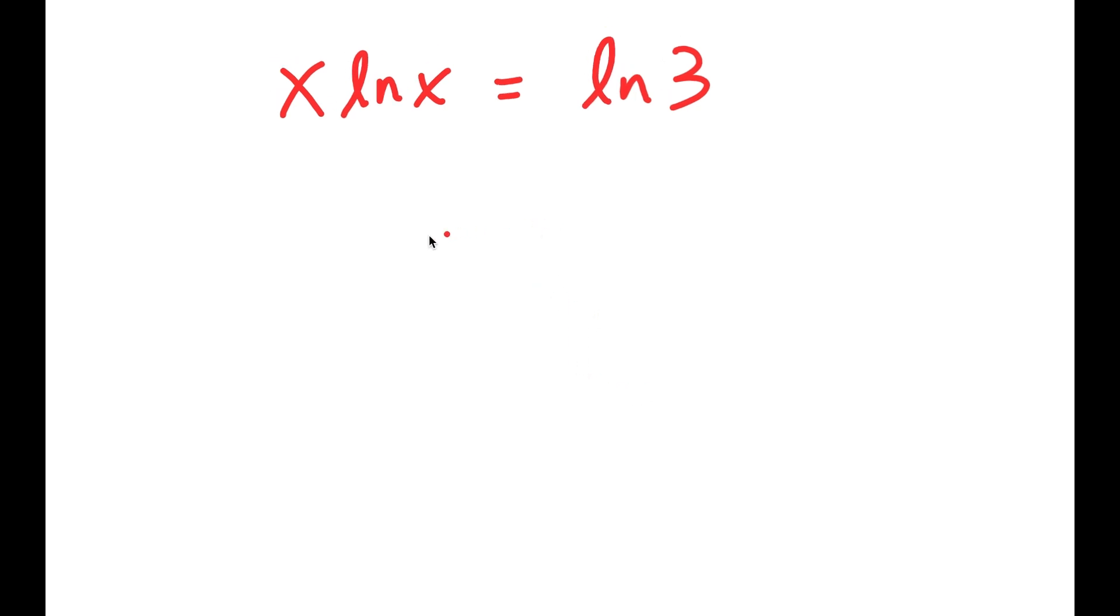Now, I'm going to use an important formula called the W Lambert formula. And it states that if I take the W of something in the form a times e to the power of a, then this is equal to a. So this is the W Lambert formula.